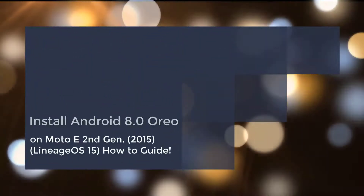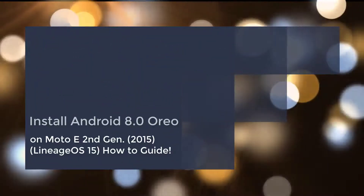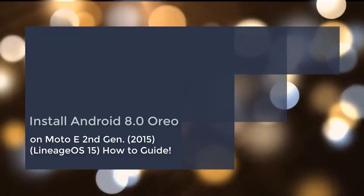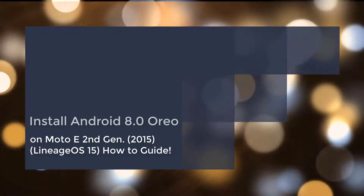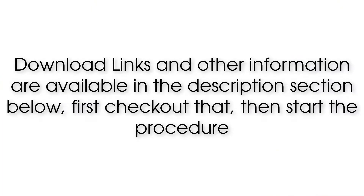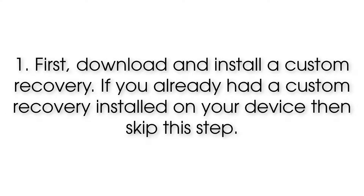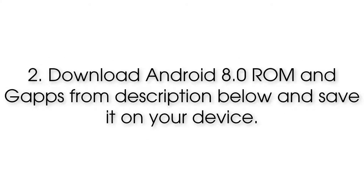Install Android 8.0 on Moto E 2nd Gen 2015 via Lineage OS 15. Download links and other information are available in the description section below — check that out first, then start the procedure. Step 1: download and install a custom recovery. If you already have a custom recovery installed on your device, skip this step.